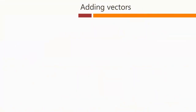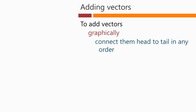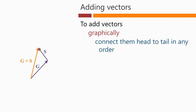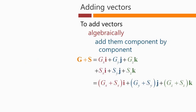We can do things with vectors mathematically — we can add them, for example. Adding vectors graphically is straightforward: we just connect them head to tail in any order. So for vector G, we add vector S together to get vector G plus S by joining the two vectors head to tail. It does not matter what order we do this in — we could start with vector S and then add vector G and still get the same result.